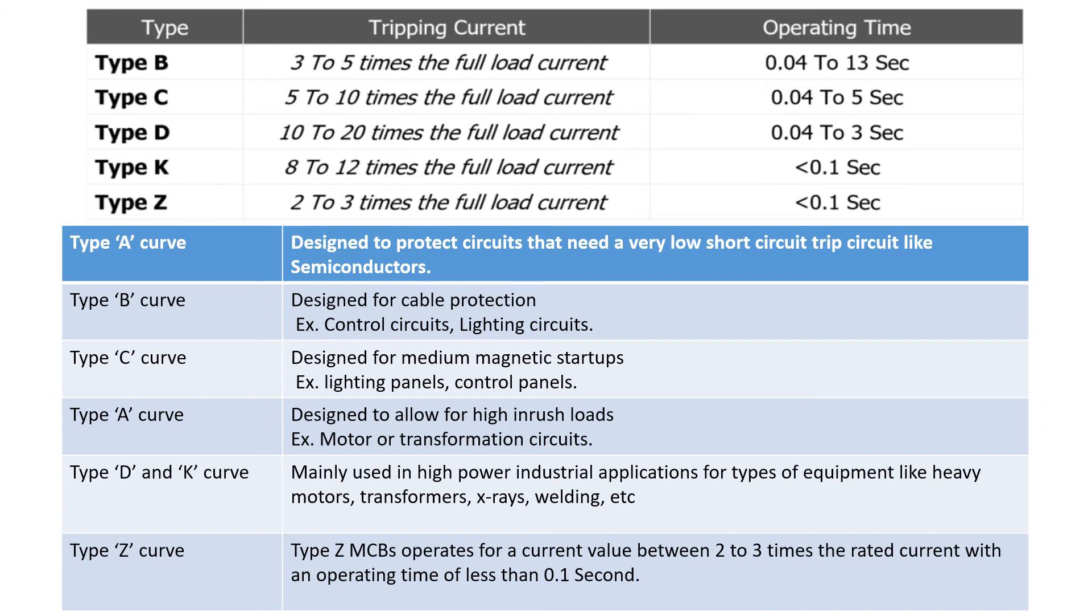This chart is for your reference which indicates you type of particular MCB and here its applications. So in fact there are type A, B, C, D, K and Z type MCBs with its tripping current and operating time. You can note down it from this particular slide and its application. Now class B type curve it is designed for cable protection for example control circuits and lighting circuits. So for domestic purpose we are preferring type B curve MCB.